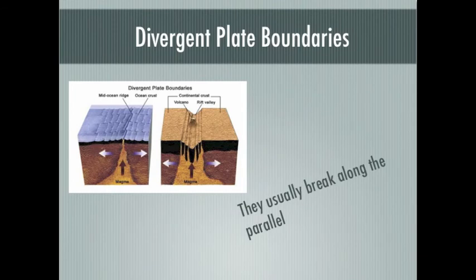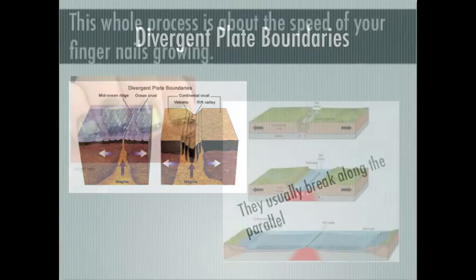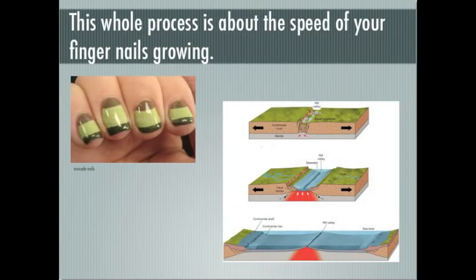This may seem like a quick process, but plate separation is actually very slow. It takes a long time. For example, divergence along the Mid-Atlantic Ridge causes the Atlantic Ocean to widen only about 2 cm a year. This is about the same rate as your fingernails growing.